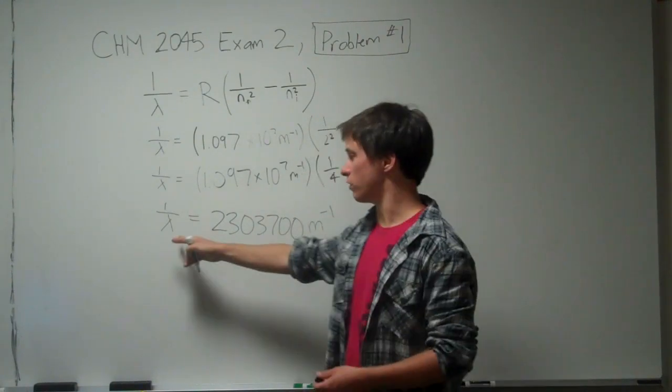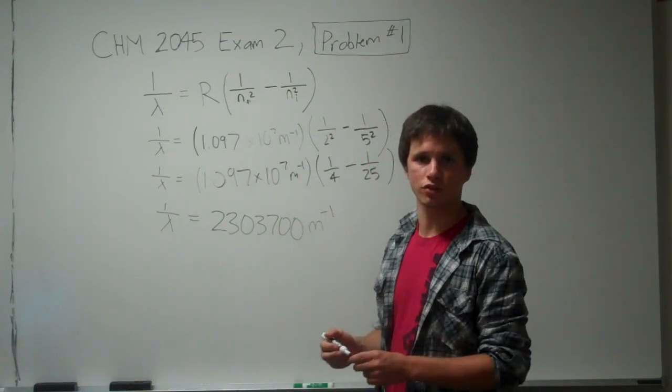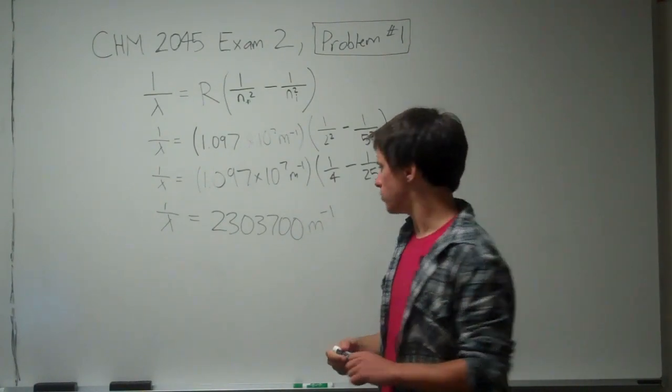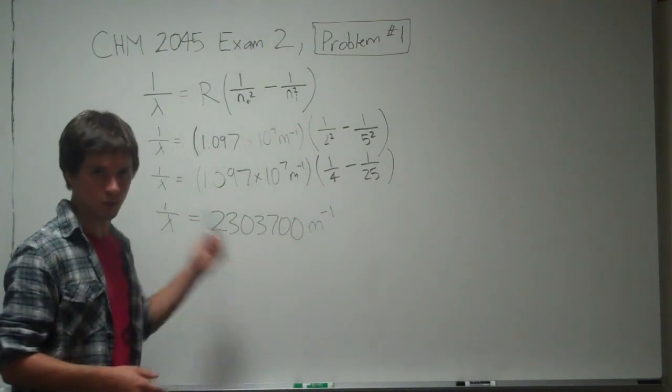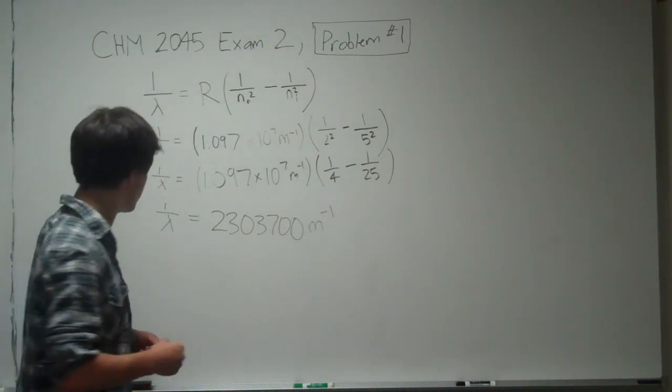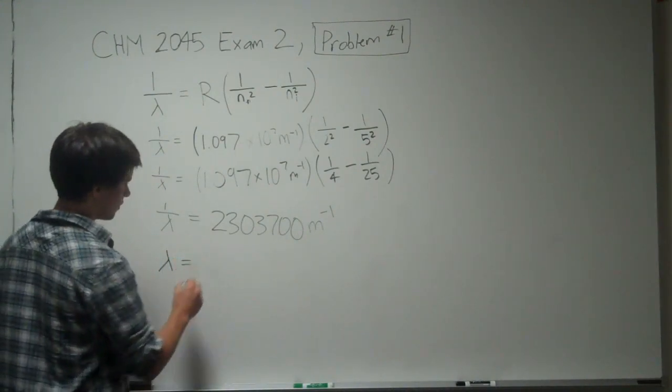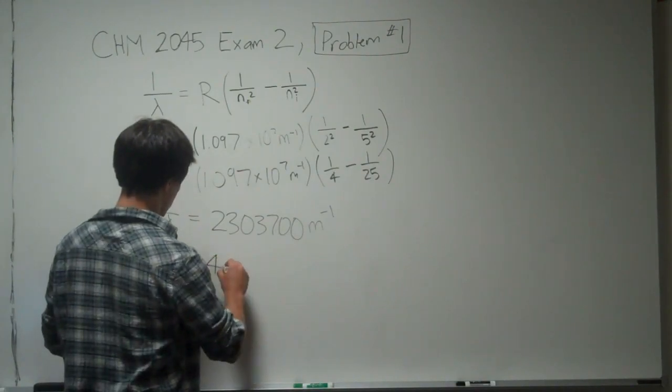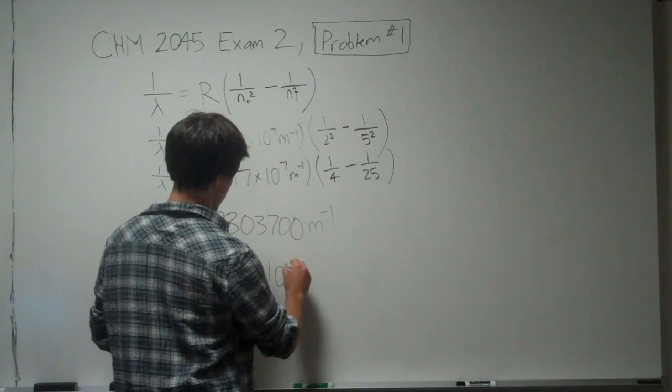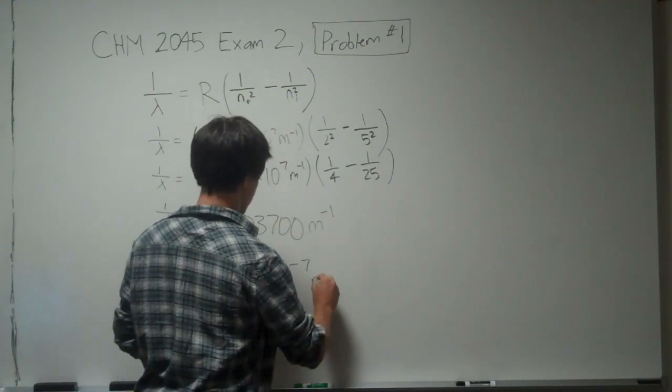But we're solving for lambda. We don't want inverse meters. We want meters for a good unit of measurement. So we're going to do the inverse of both sides, or 1 divided by both sides, basically. So that's going to give us lambda equals 4.34 times 10 to the negative 7 meters.